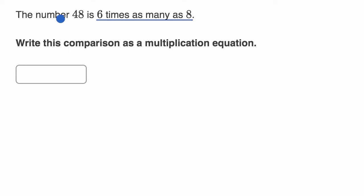So they're saying the number 48, and when they say is, that's another way of interpreting is, to say that's equal to something. Now what is that equal to? That's equal to six times as many as eight. Well, what's another way to write six times as many as eight? We could write that as six times eight.